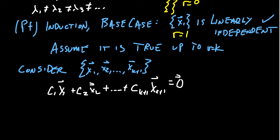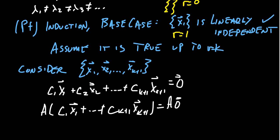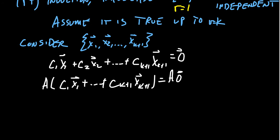Taking this equation, let's first multiply it by the matrix A. So we multiply everything on the left-hand side, C1 X1, all the way up to C K plus one, X K plus one. And then on the right-hand side, we times A times 0. The right-hand side is pretty easy to deal with. We're going to end up with A times 0.